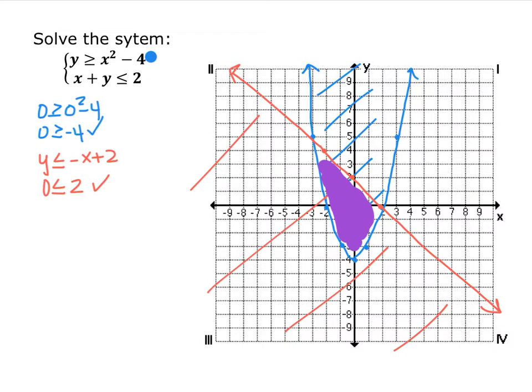And then the line I did just like we were doing on the previous ones, 0 is less than or equal to 2, so I shaded down. So my solution is the part that's inside the parabola, but below the line. So this purple part in here.